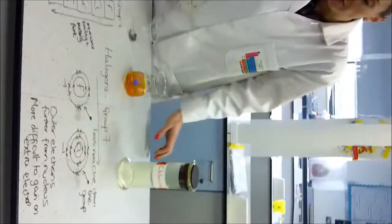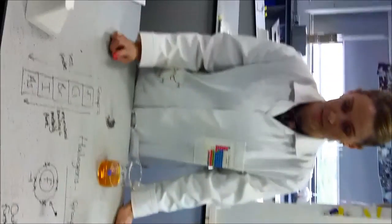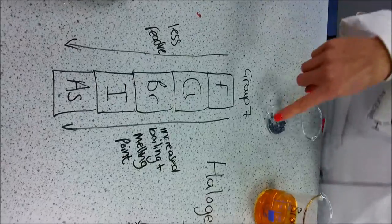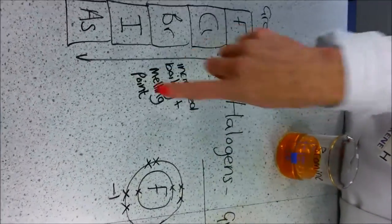So, we'll have a look at the group in the periodic table. So, group 7, as we go down this group they become less reactive. Their boiling and melting points increase.